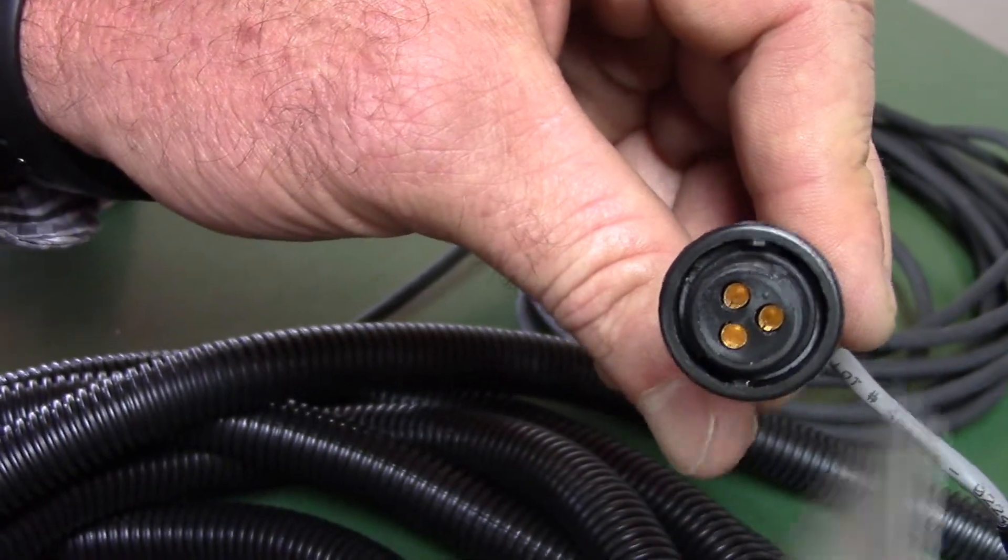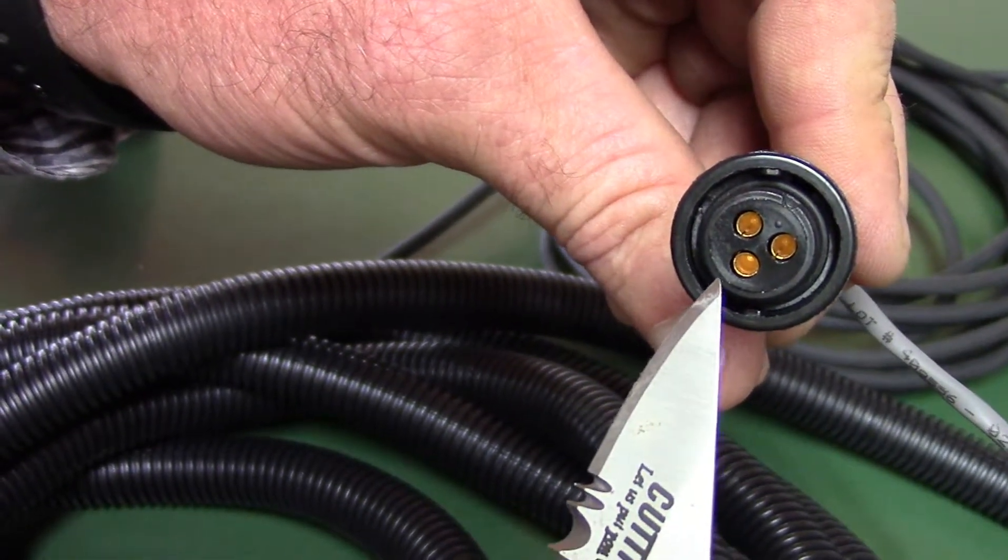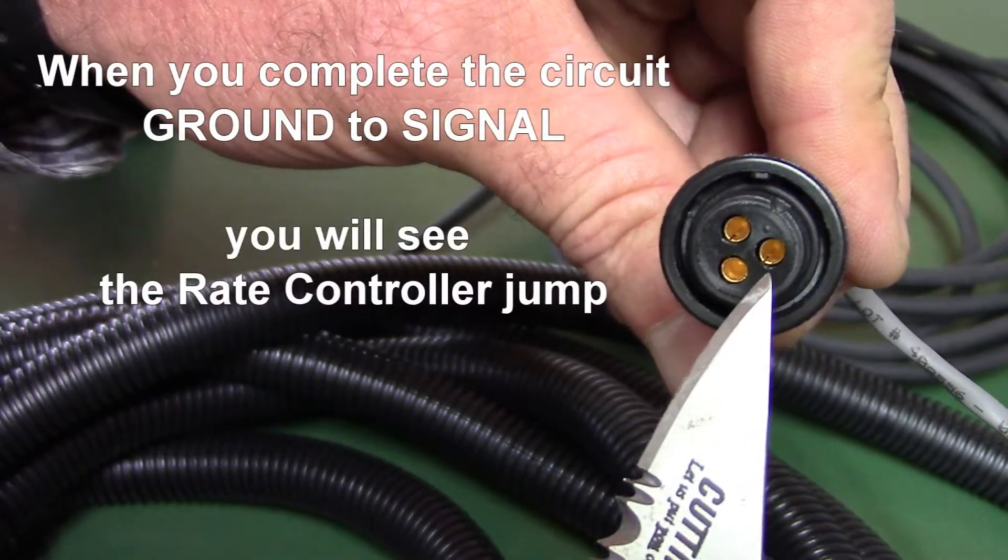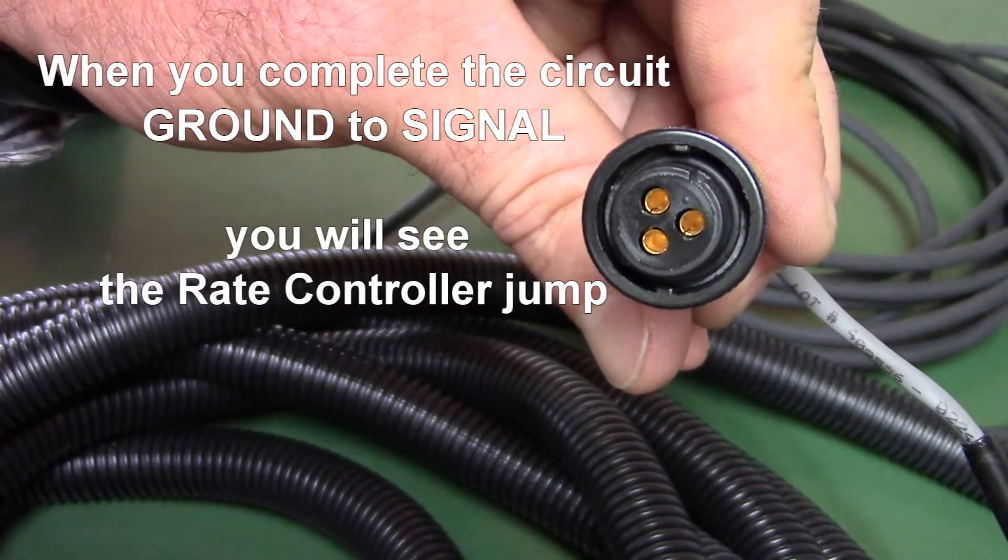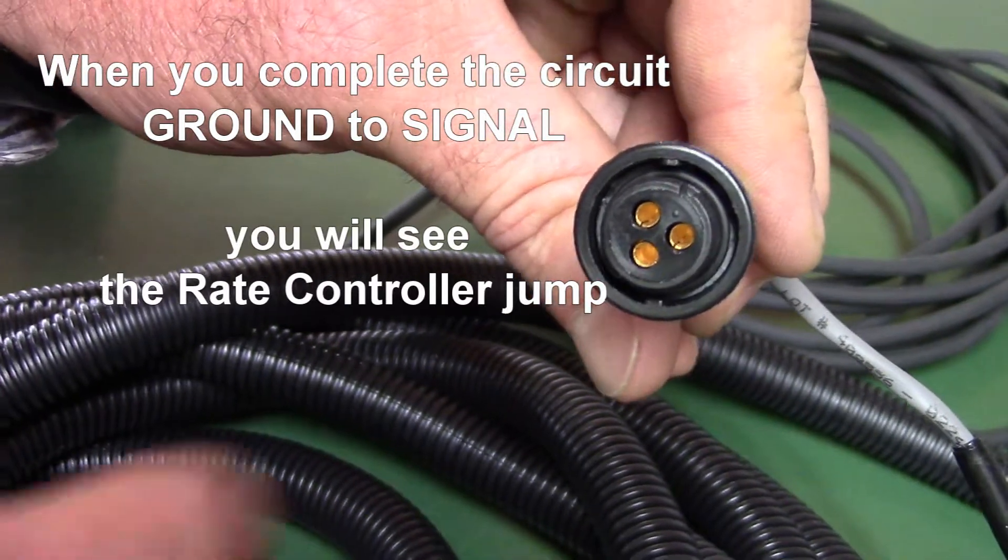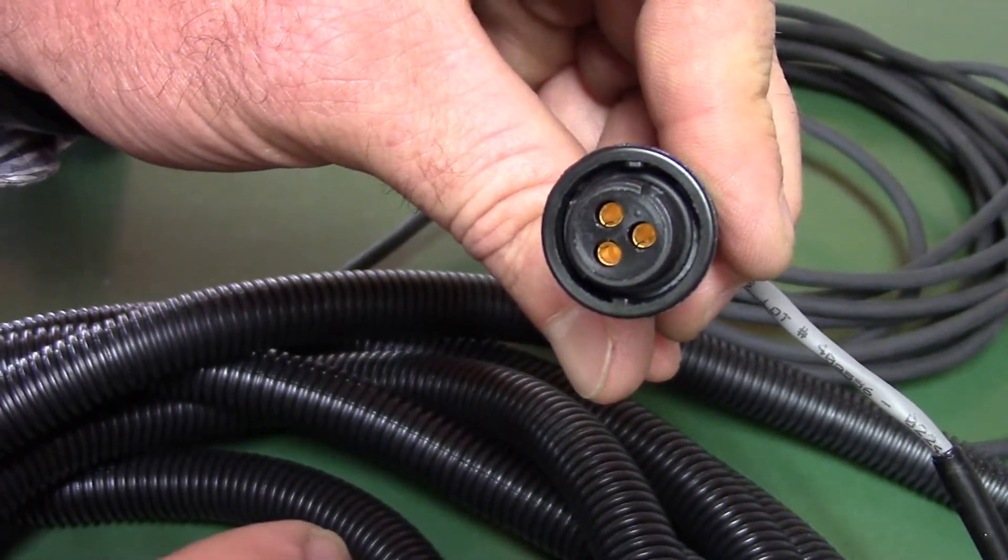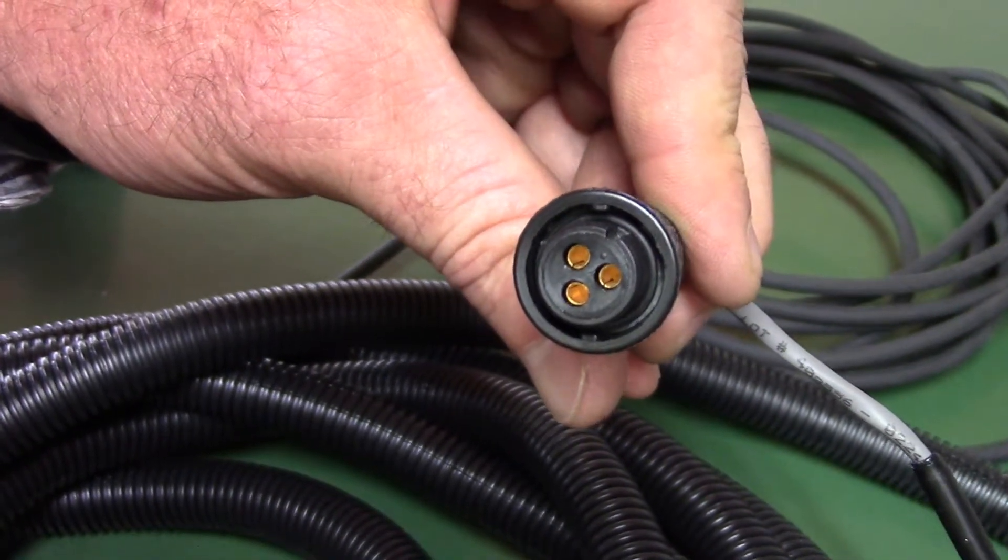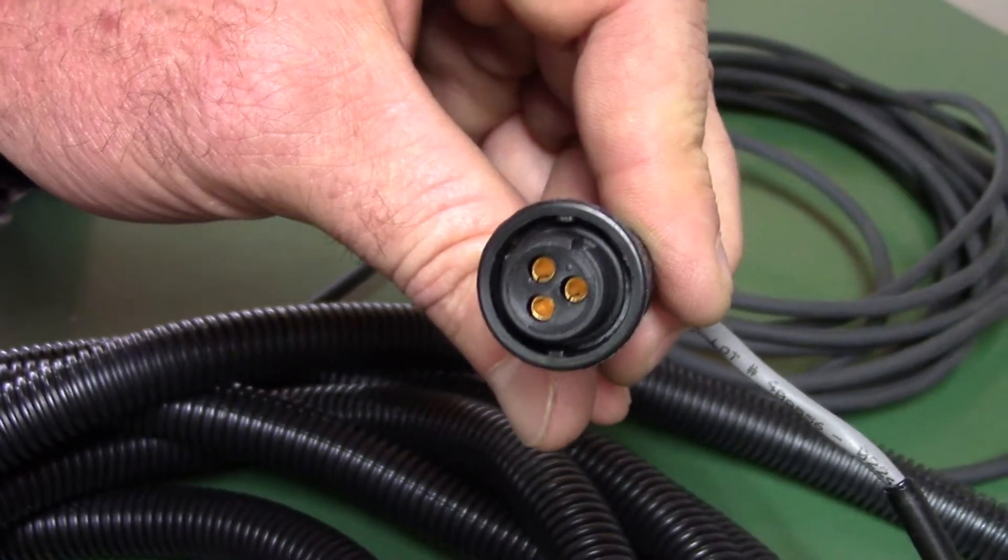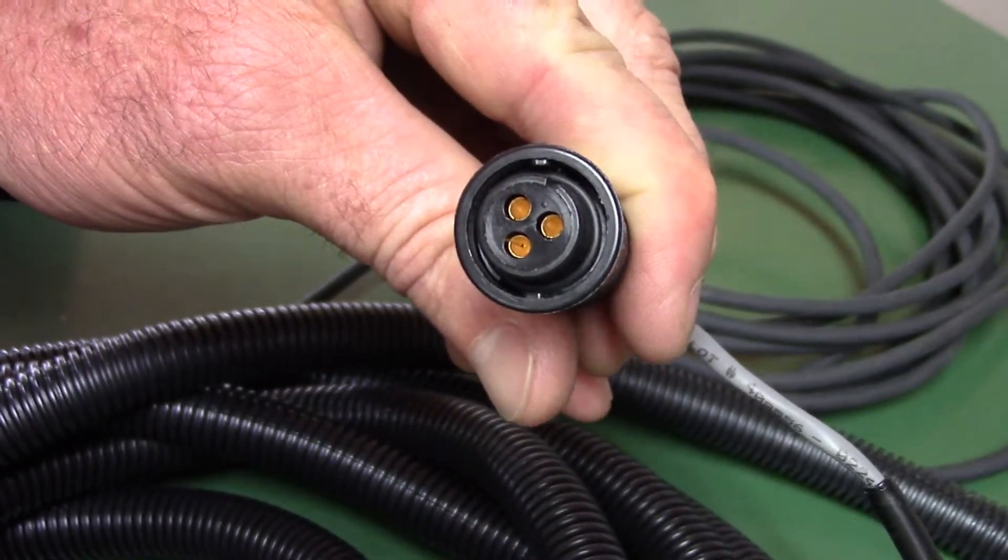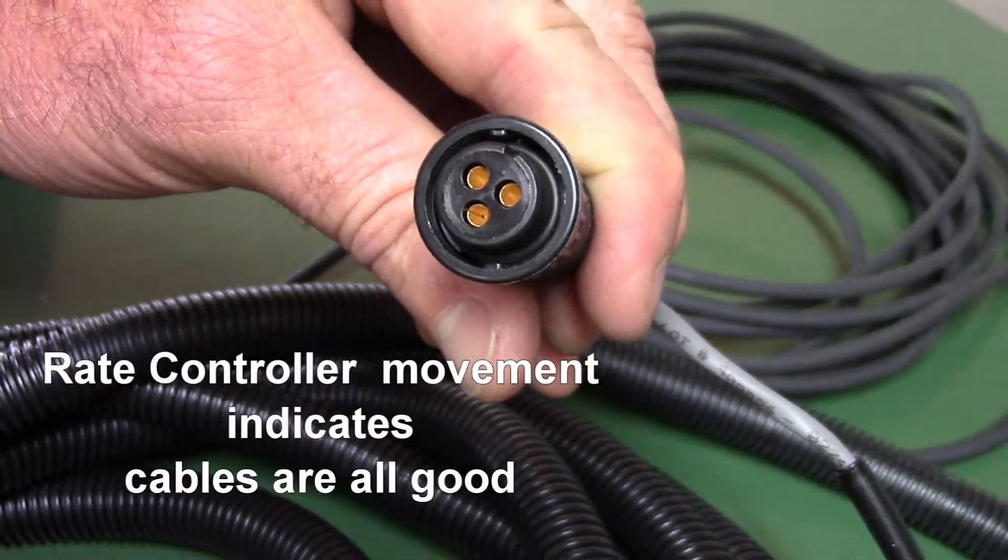Then when you go back here and take a small jumper wire like a paper clip in a U, each time you touch from the ground to the signal, it's going to start counting on your rate controller. Each time you make that connection it'll jump up like 50 pounds or 30 pounds or whatever it might be. Each time you make that short no short connection it's going to increase, and if that happens then you know all your cabling from here back to your rate controller is good.